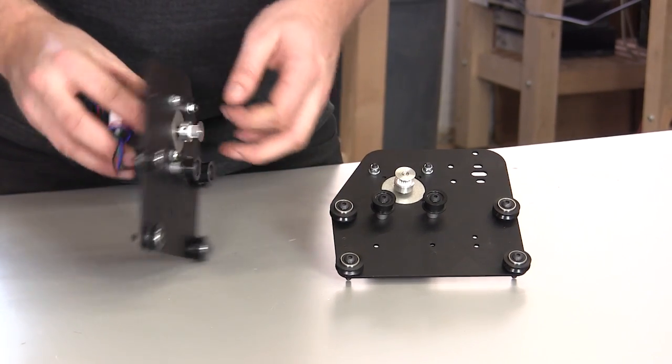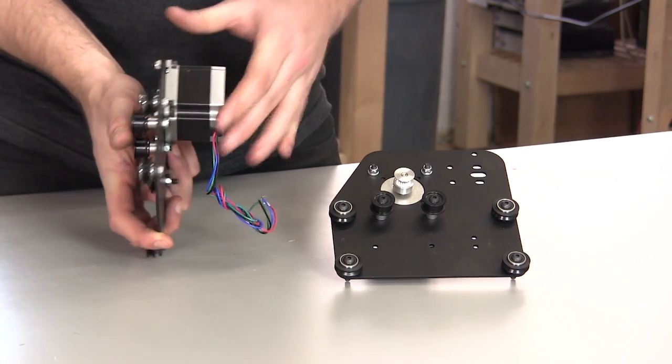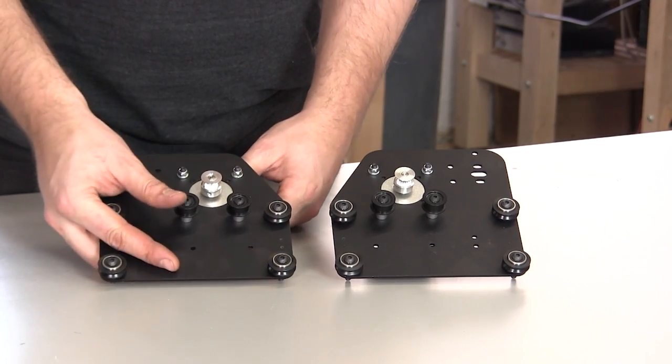We're going to go through the same procedure for your other Y motor mount plate. Again, making sure that it's a mirror image of this first one.